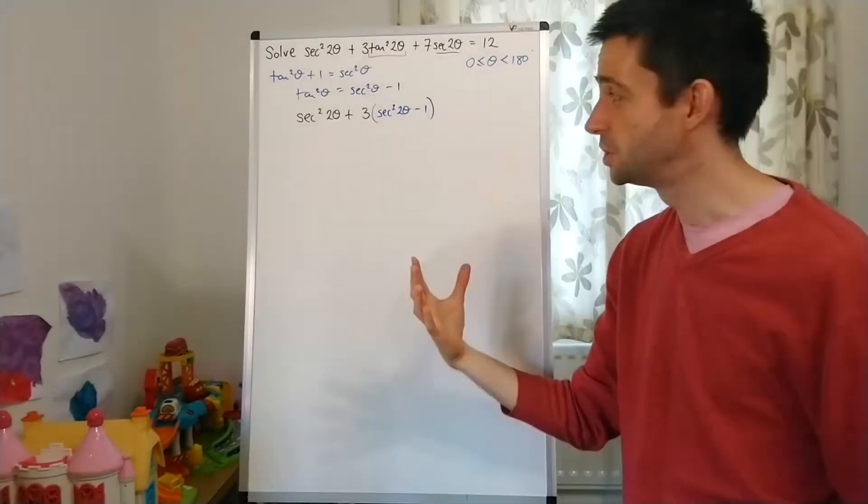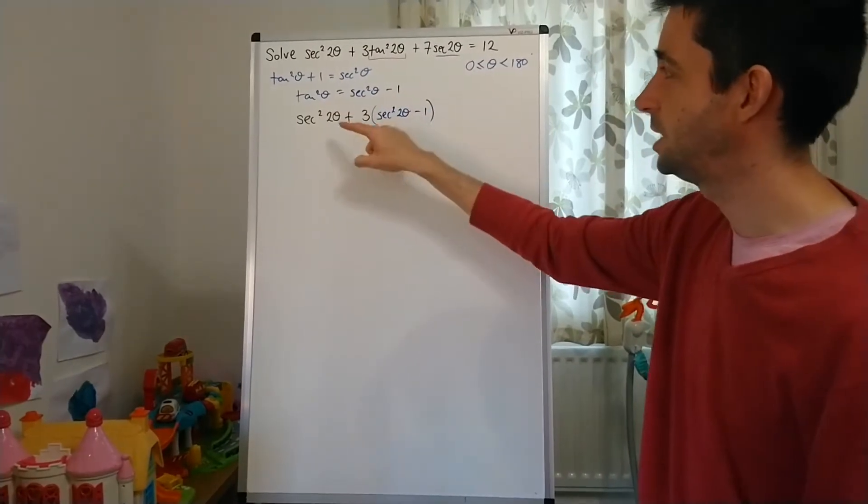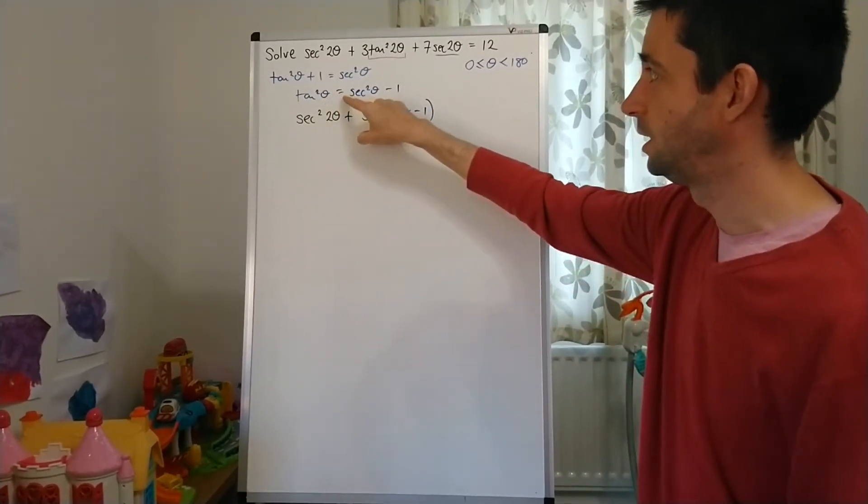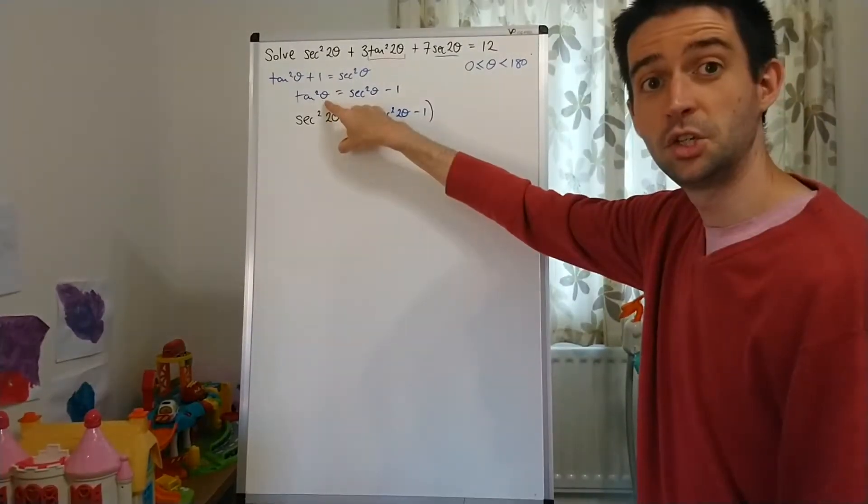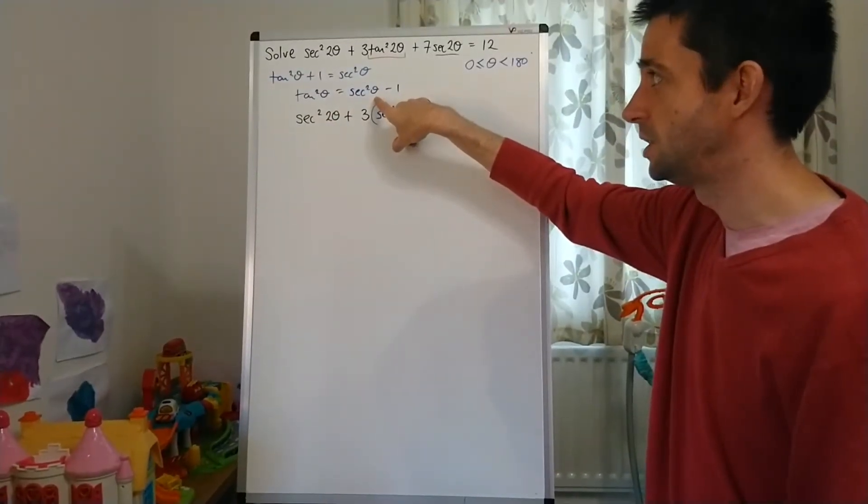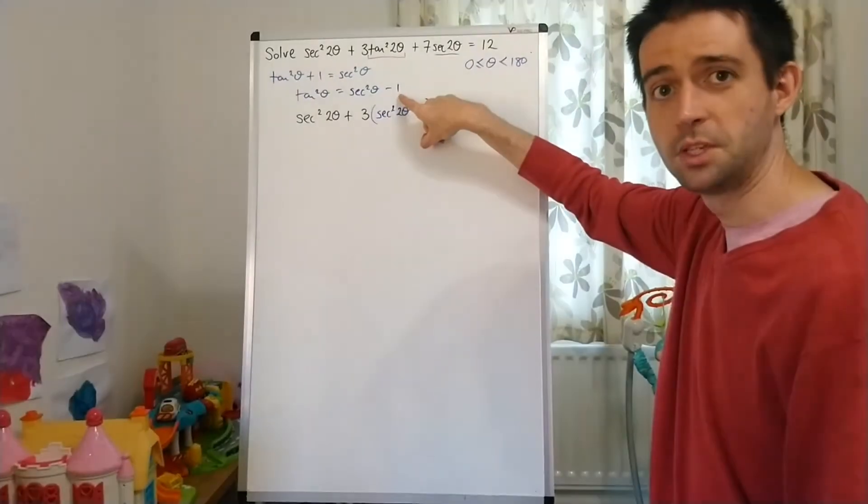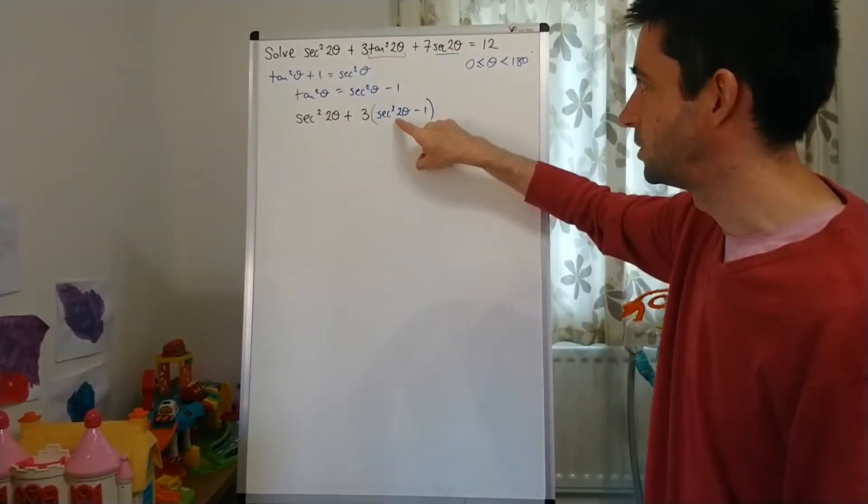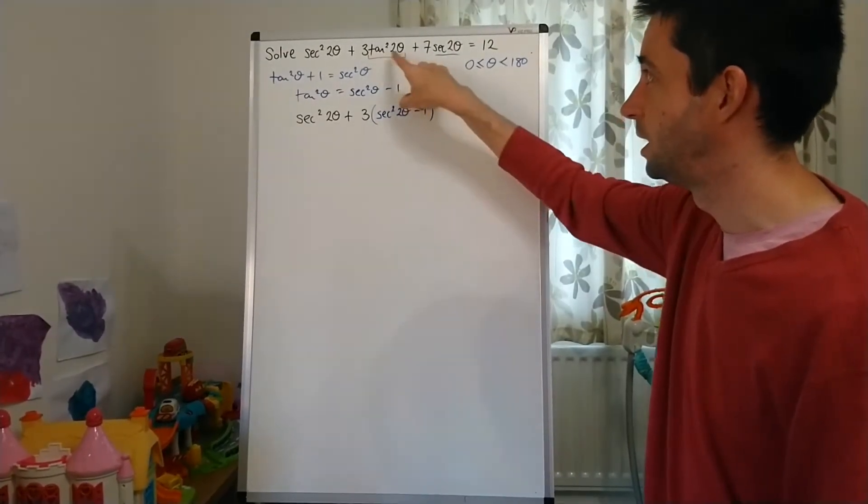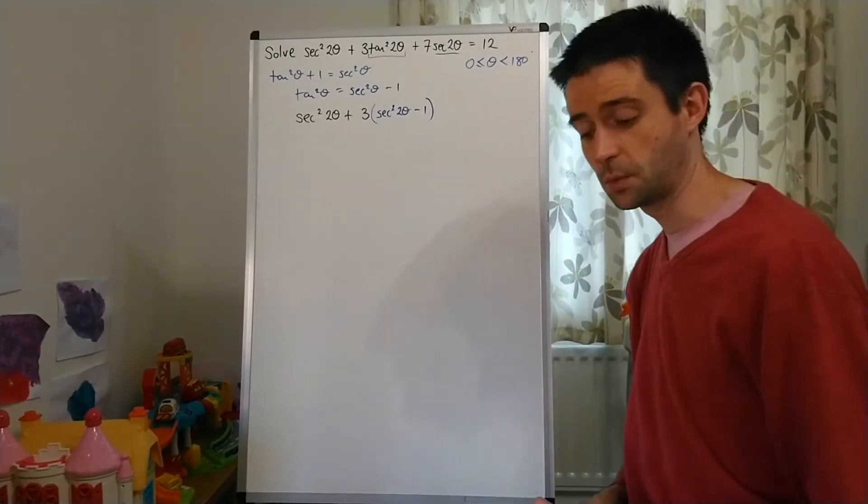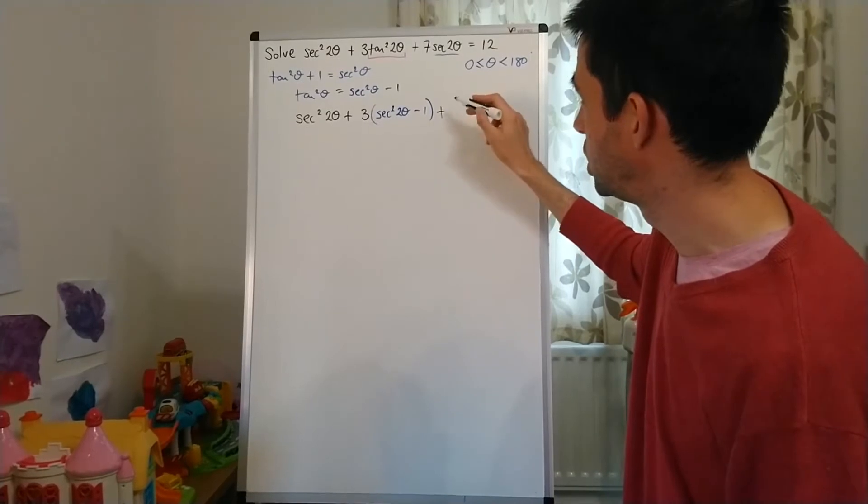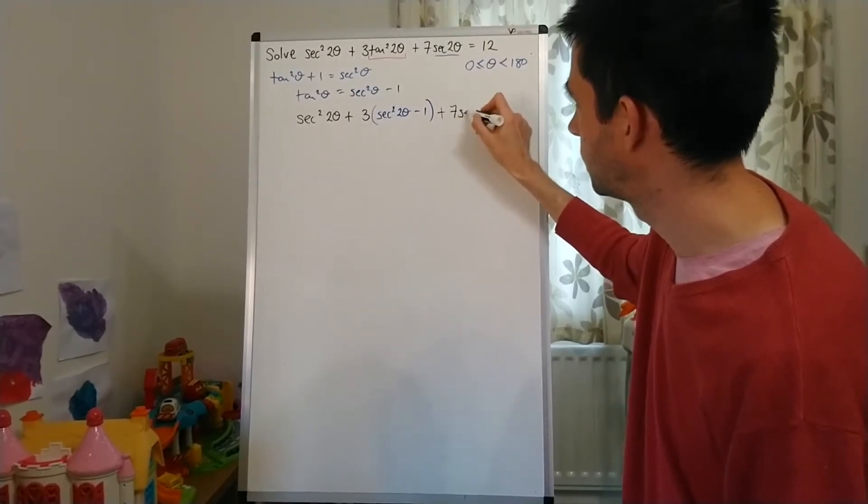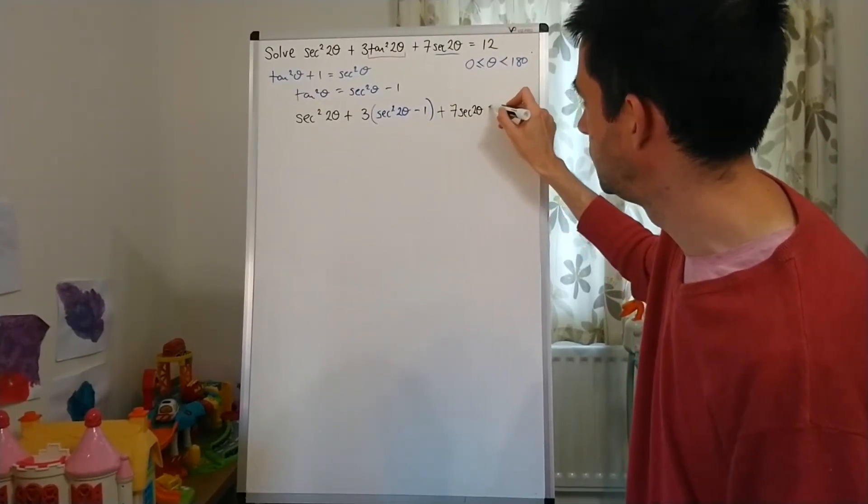And that's just important here because if you look at this identity, tan²θ = sec²θ - 1, if I change that θ to 2θ, it changes this θ to 2θ. It doesn't change anything about this minus 1. So sec²2θ - 1 is the replacement for tan²2θ. And the remainder of the equation is unchanged. So 7sec2θ = 12.